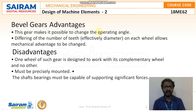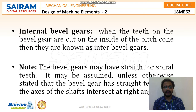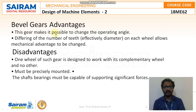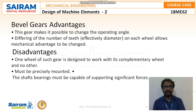The advantages of bevel gears include: these gears make it possible to change the operating angle, and by differing the number of teeth — effectively the diameter on each wheel — the mechanical advantage can be changed. The disadvantage is that one wheel of such a gear is designed to work only with its complementary wheel and no other, focusing only on the weaker one. Additionally, the gears must be precisely mounted, as any mistake in mounting may lead to immediate failure, and the shaft bearings must be capable of supporting significant forces.